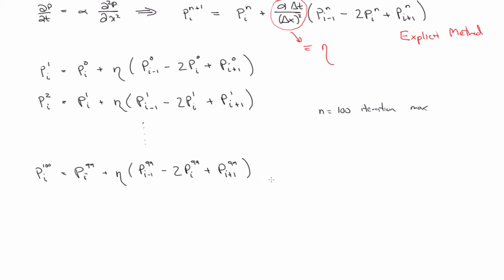But you might ask, well, why would we ever do that? This is so simple. And the caveat is that, in this method, for it to be stable, eta has to be less than a half.